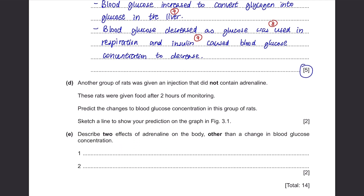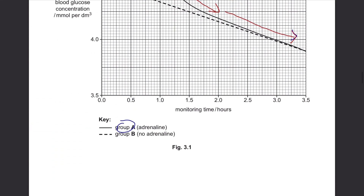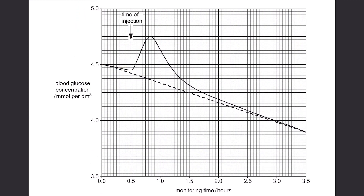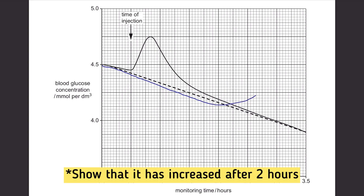Part D. Another group of rats was given an injection without adrenaline, and these rats were given food after 2 hours of monitoring. Predict the changes in blood glucose concentration and sketch a line on Figure 3.1. Since having food makes blood glucose concentration increase, and food was given only after 2 hours, you would show the blood glucose decreasing initially, then increasing after the 2-hour mark.